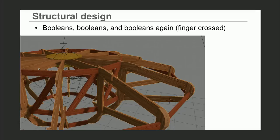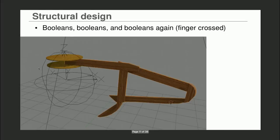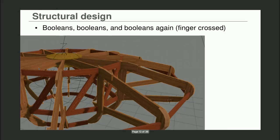With booleans you have to cross your fingers — you can put in the 12th boolean and everything disappears, then you move 1.01 in one direction and it comes back. I used Blend4Web so the artist in Paris could check the structure by moving the 3D model in his browser and verify the size with a person inside. Then I used FreeCAD to import the shapes and draw precise plans for measurements.